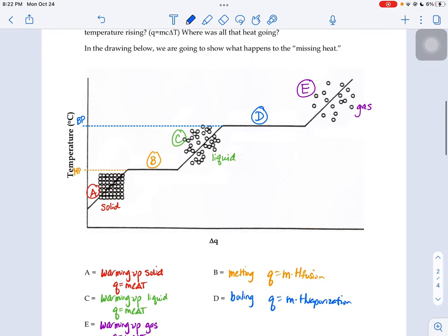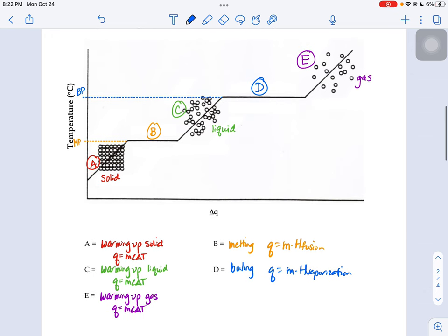When we're looking at our phase change diagram, we can see in sections A, C, and E that we have temperature changes going on. So in section A, your substance is a solid the whole time, it's just the temperature of that solid is changing.